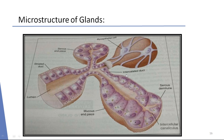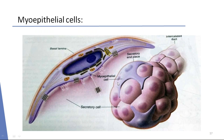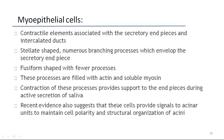These are the myoepithelial cells — contracted elements associated with the secretory endpoints and intercalated ducts. They are stellate-shaped with numerous branching processes which envelop the secretory endpoints; also fusiform-shaped with cusp processes. These processes are filled with actin and soluble myosin. Contraction of these processes provides support to the endpoints during active secretion of saliva. Recent evidence also suggests that these cells provide signals to acinar units to maintain cell polarity and structural organization of acini.